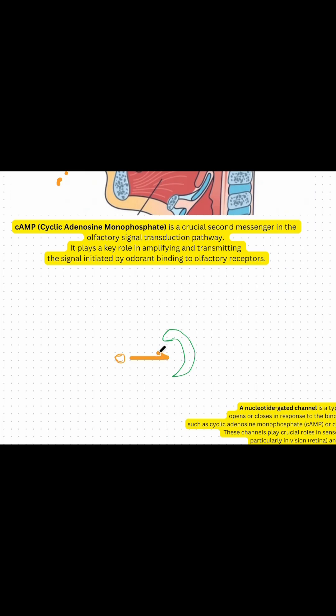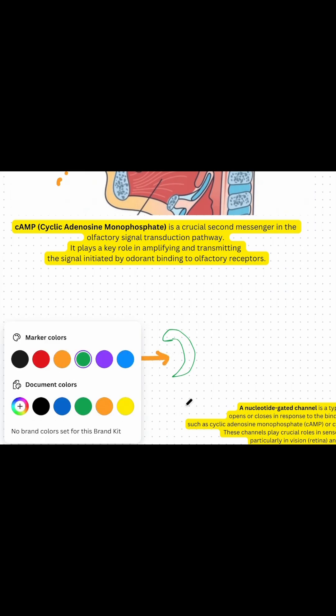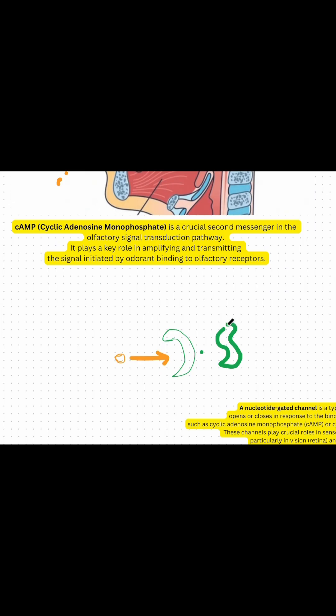The binding of the receptor—the odorant in orange, the receptor in green—causes a conformational change, or a change in shape. This change in shape activates an intracellular signaling pathway.